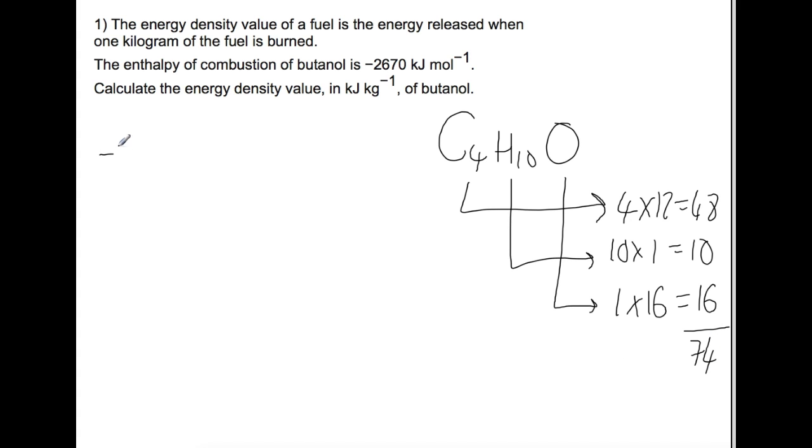So now we know that -2670 kilojoules is produced when we burn 74 grams of butanol. So if we divide by 74 to find what one gram would be, and then multiply by a thousand to get a kilogram.